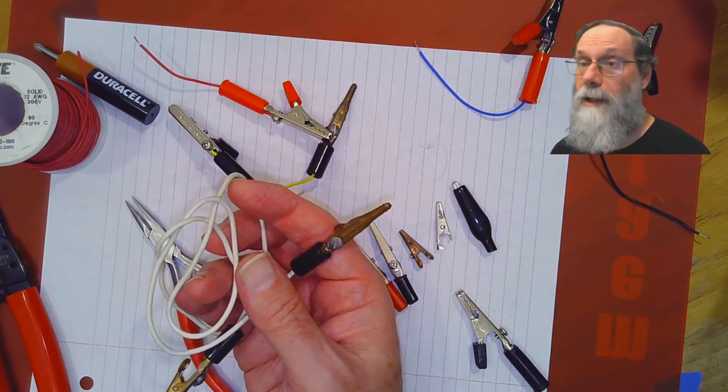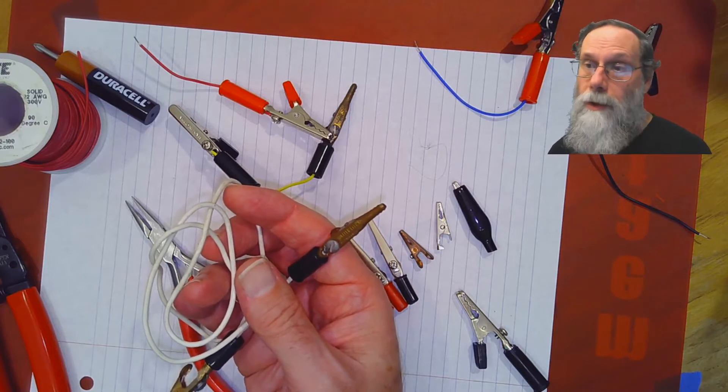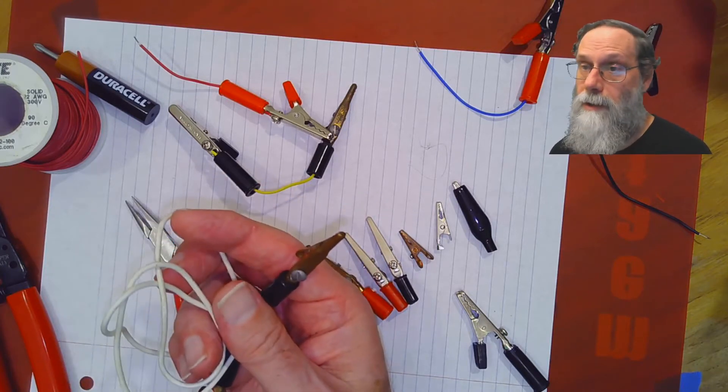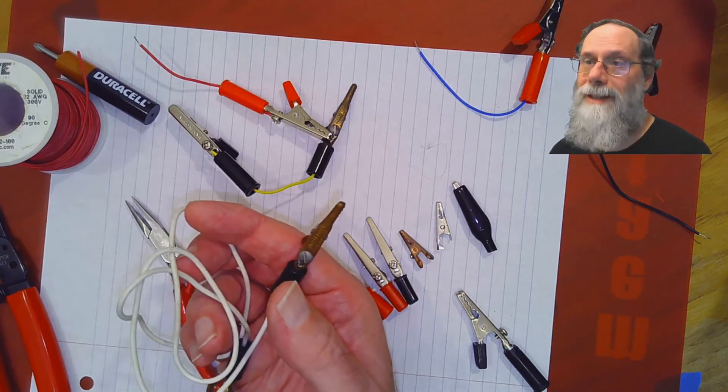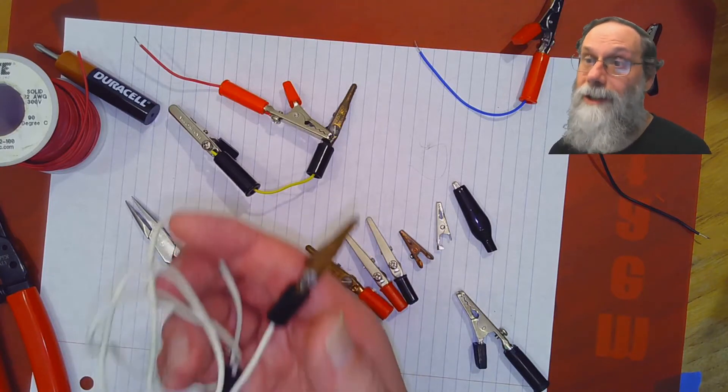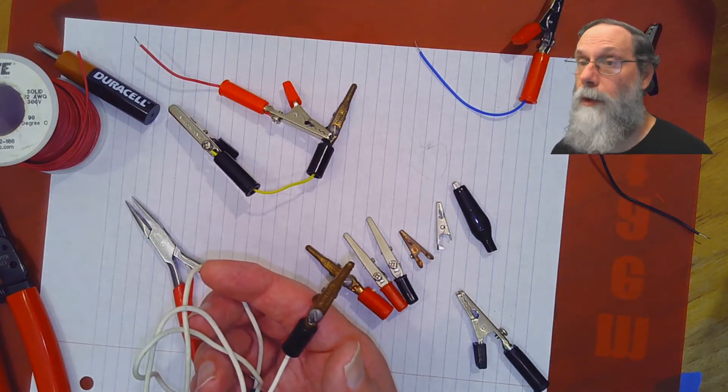You're going to want to connect the thermistor to the ohmmeter with an alligator clip because the thermistor is going to be dunked in water and we don't want to be taking the voltmeter or ohmmeter and dunking it in water, particularly in the second part where we'll be doing stuff with breadboard.